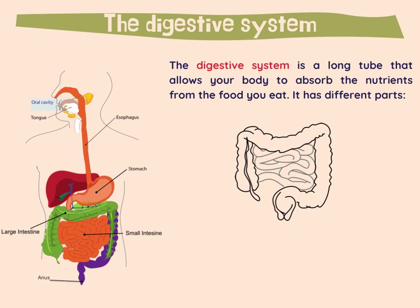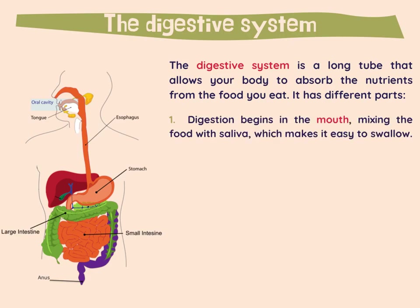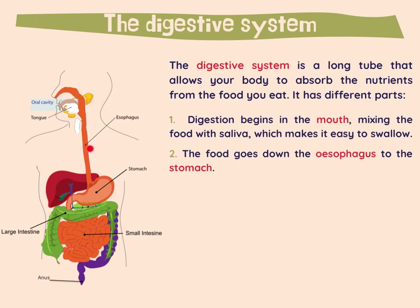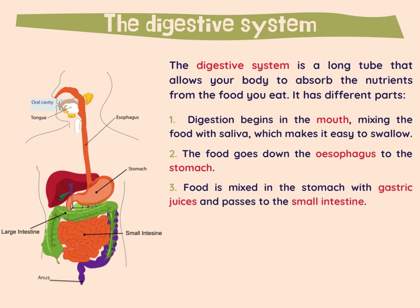The digestive system is a long tube that allows your body to absorb the nutrients from the food you eat. It has different parts. Digestion begins in the mouth, mixing the food with saliva, which makes it easy to swallow. Then the food goes down the esophagus to the stomach, where food is mixed with gastric juices and passes to the small intestine.